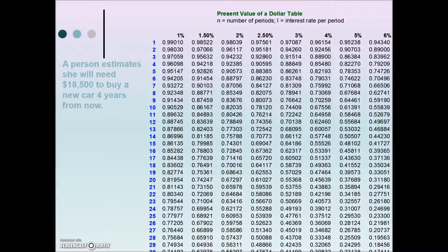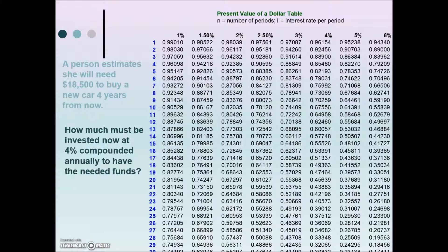In this first example, a person estimates she will need $18,500 to buy a new car four years from now. The $18,500 is a future value. The question is asking us how much must be invested now at 4% compounded annually to have the needed funds. In other words, what's the present value?